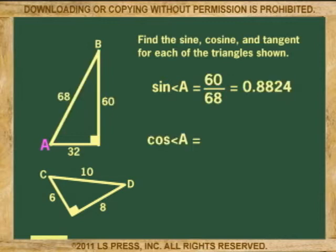Next, the cosine. To do the cosine of angle A, we have to select the adjacent side. The adjacent side of angle A is 32. So the cosine is 32 over the hypotenuse, 68, or 0.4706.